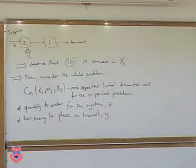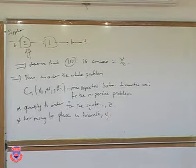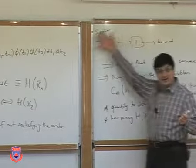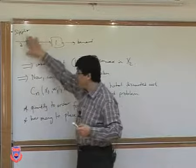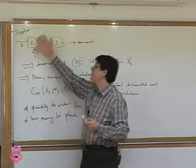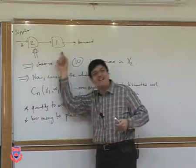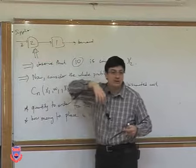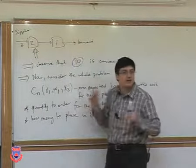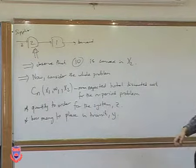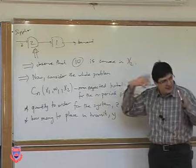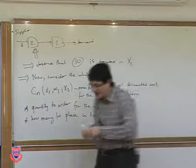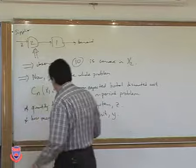There are two system-wide decisions: the quantity ordered from outside — the newcomers — and the amount placed in transit that will arrive at installation one two periods later in this specific case. We have an idea on what Y should be because we already dealt with that problem individually.